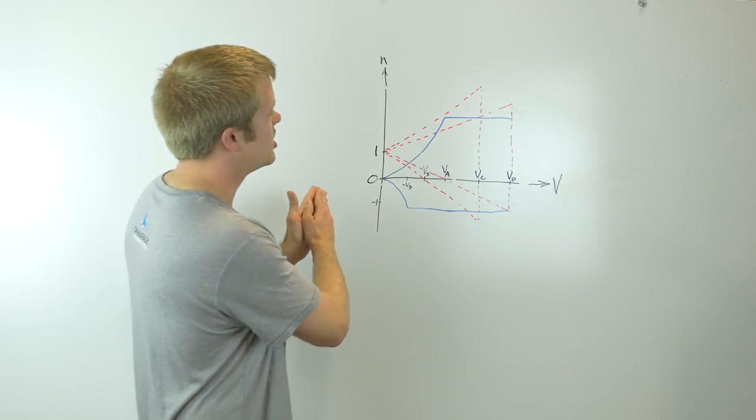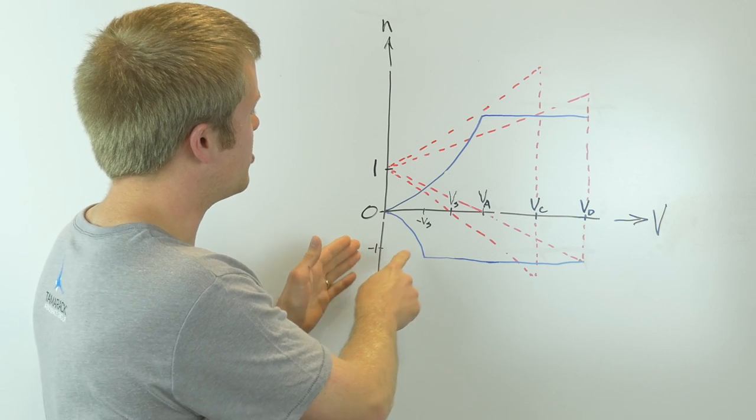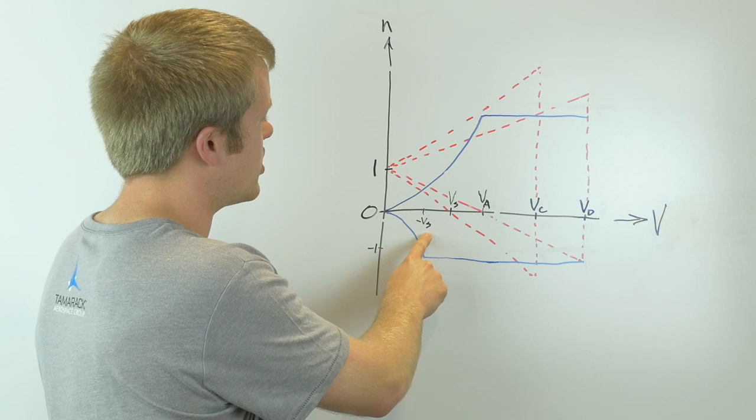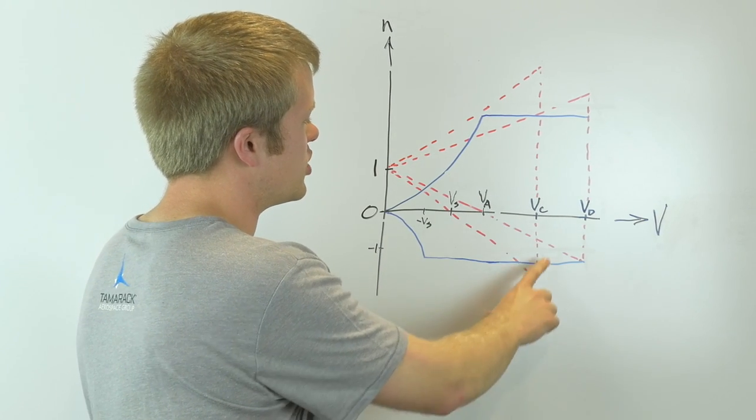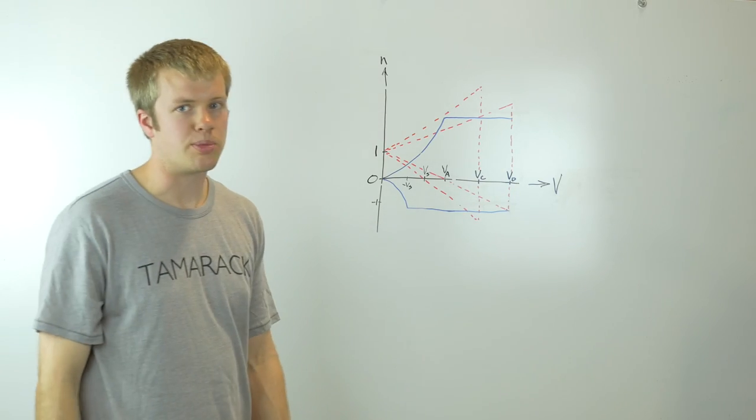The VN diagram plots the airspeed of the airplane versus the load factor, and it plots these at several critical design airspeeds such as your negative stall speed, your positive stall speed, your maximum maneuvering airspeed, the design cruise speed, and the design dive speed of the airplane.